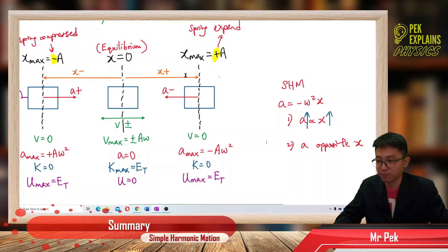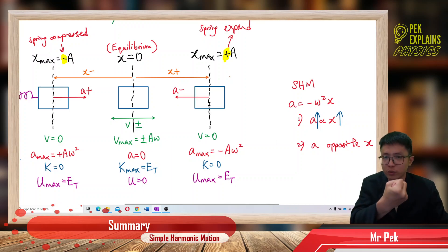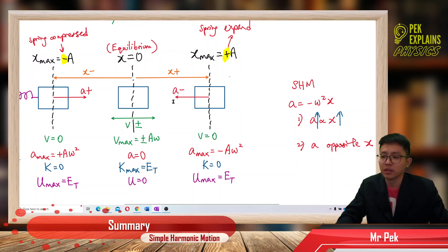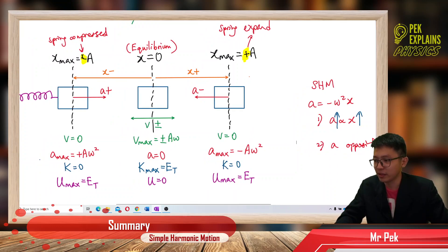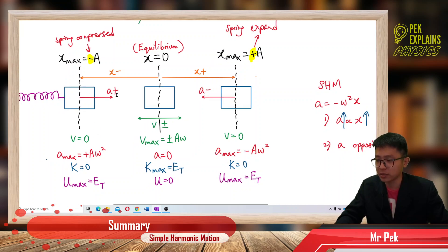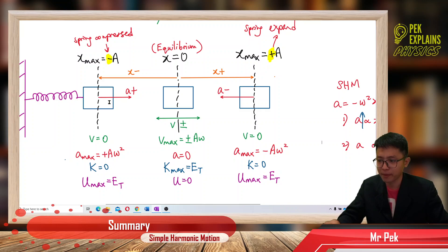When displacement is positive, acceleration is negative. Why? Because when you extend the spring, the spring wants to pull back — the restoring force pulls to the left, so acceleration is negative (to the left). When displacement is negative, acceleration is positive, because when you compress the spring, it wants to push back to the right toward the equilibrium.